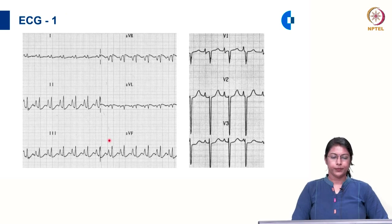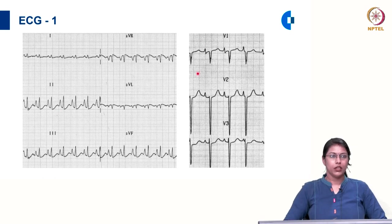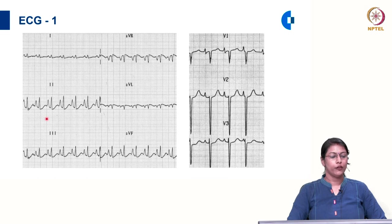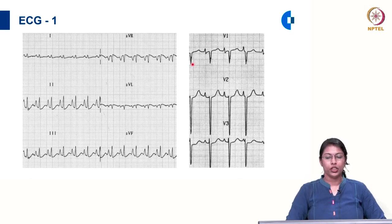In ECG 1, we look at lead 2 and V1. We see the P wave in lead 2 and V1 because the P wave axis is in the direction of lead 2 and V1 is the right precordial lead. Here we have a very tall P wave of amplitude more than 4 millimetre. In V1, there is a biphasic P wave with the positive deflection more than 0.1 millivolt. This ECG is suggestive of right atrial abnormality.